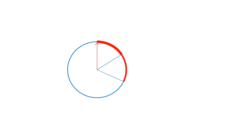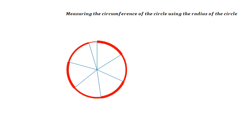In radians we take a radius of a circle and use it to measure along the circumference. This is measuring the circumference of the circle using the radius of the circle. This is measuring a part of the circle using another part of the circle.